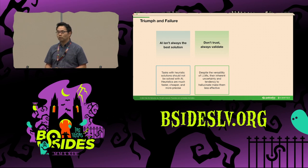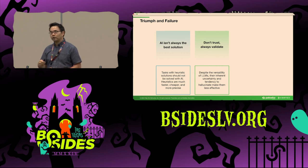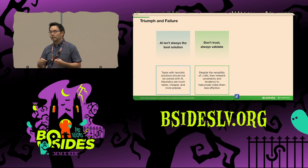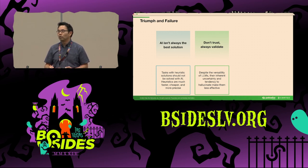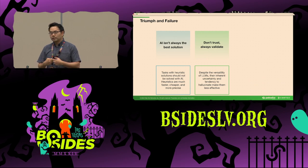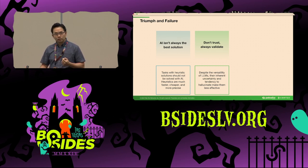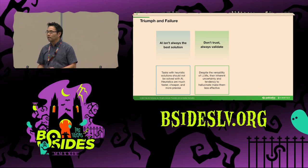Second: don't trust, always validate. Blindly trusting AI output can be very dangerous, especially in critical applications where mistakes can cost millions or even human lives. In our research, AI often gave us nonexistent parameters, endpoints, or shell commands. These mistakes result in failed test cases, false positives, and false negatives. It is crucial to always validate the output of AI before using it or passing it to the next stage.